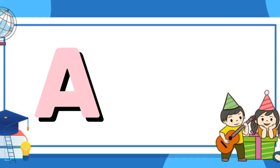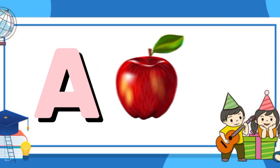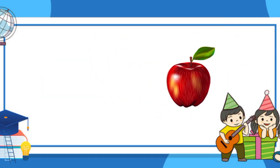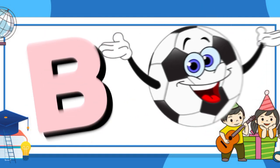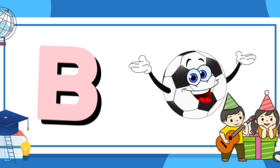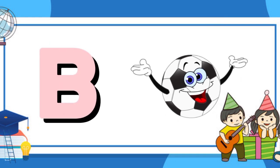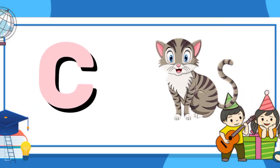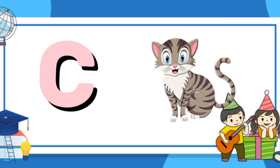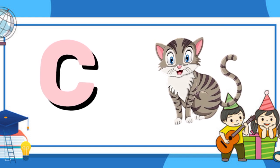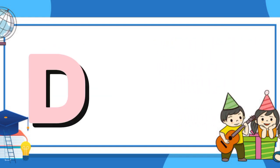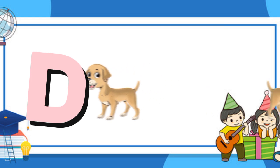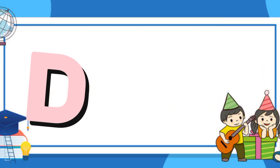A is for apple, a-a-apple. B is for ball, b-b-ball. C is for cat, c-c-cat. D is for doll, d-d-doll.